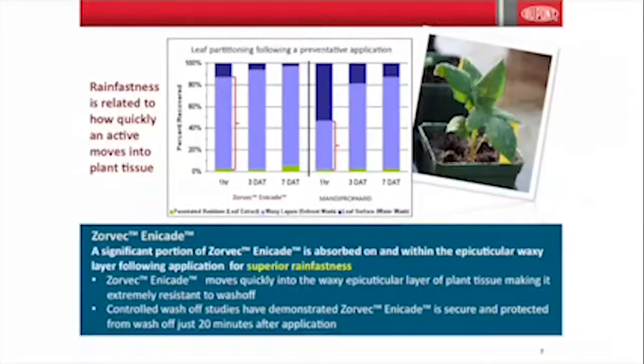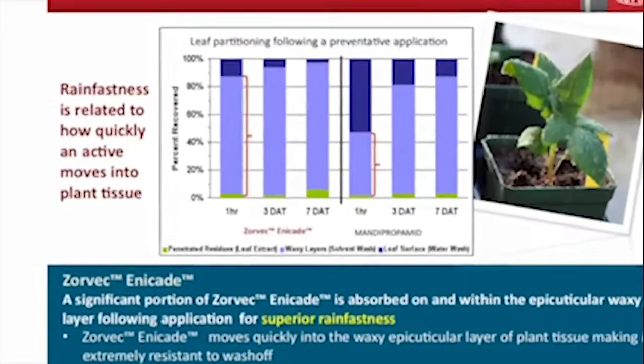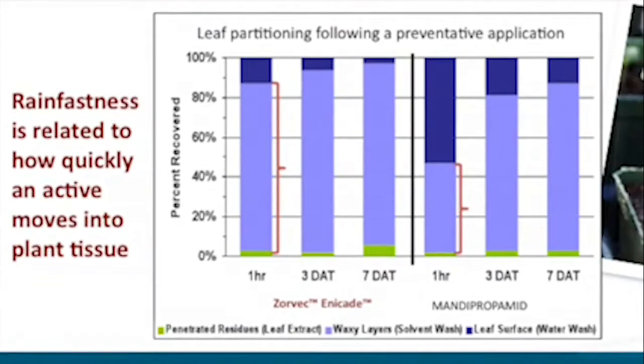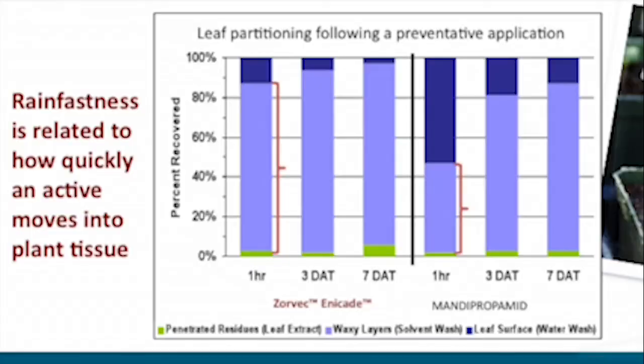Related to its lipid solubility is its rain fastness. It gets into plant tissue very quickly. The graph shows three colors: green is the amount getting into plant sap, mauve is what's taken up by the lipid/waxy layers stripped with a solvent wash, and the remaining portion is surface residue. After one hour, only about 20% comes off with a water rinse, while 80–90% is already in the waxy layers.